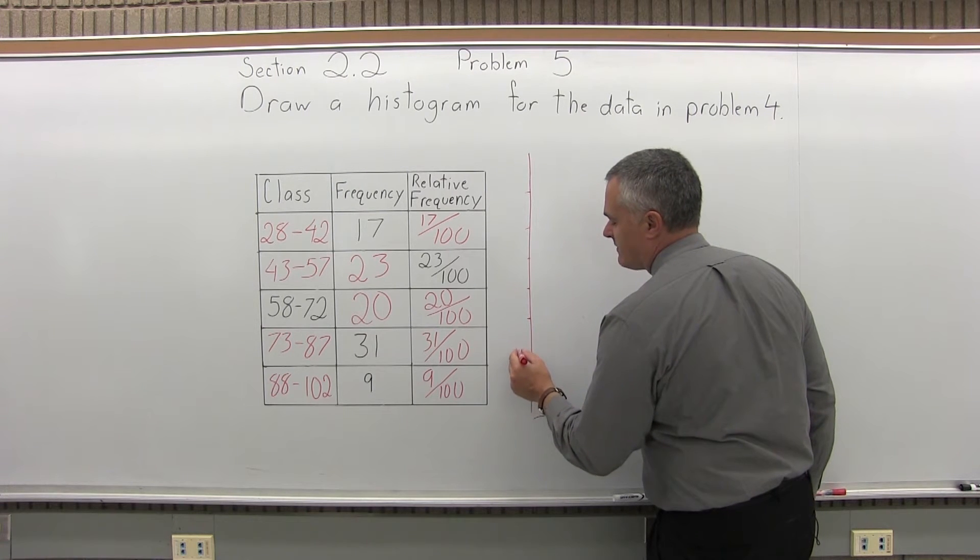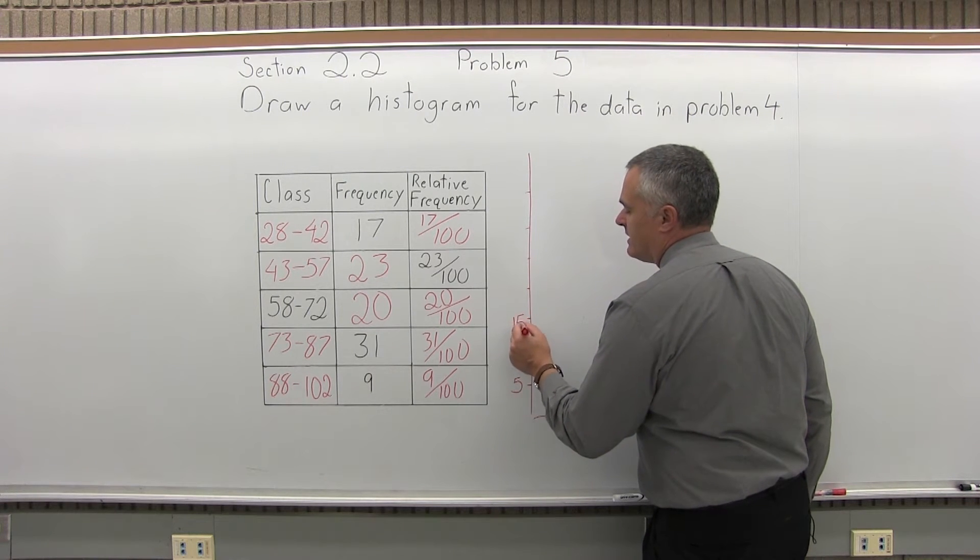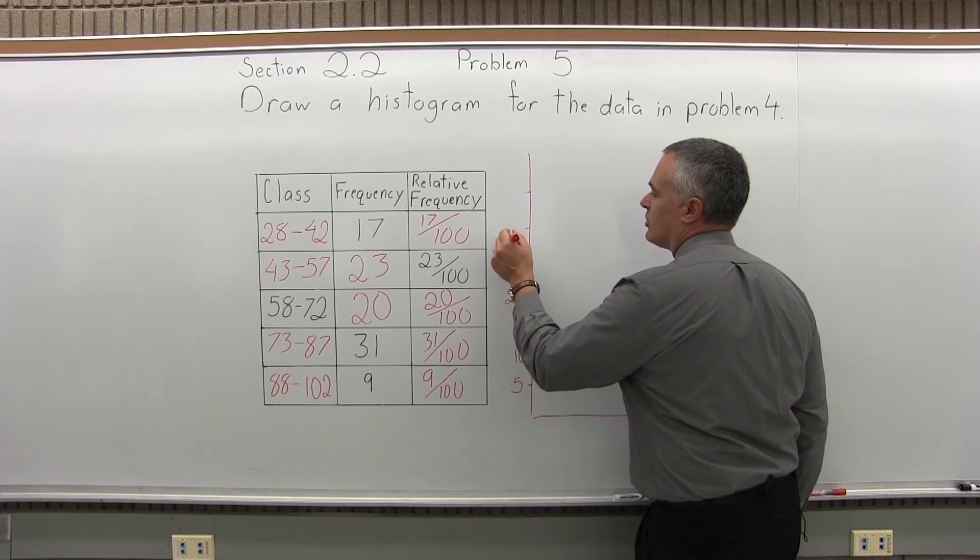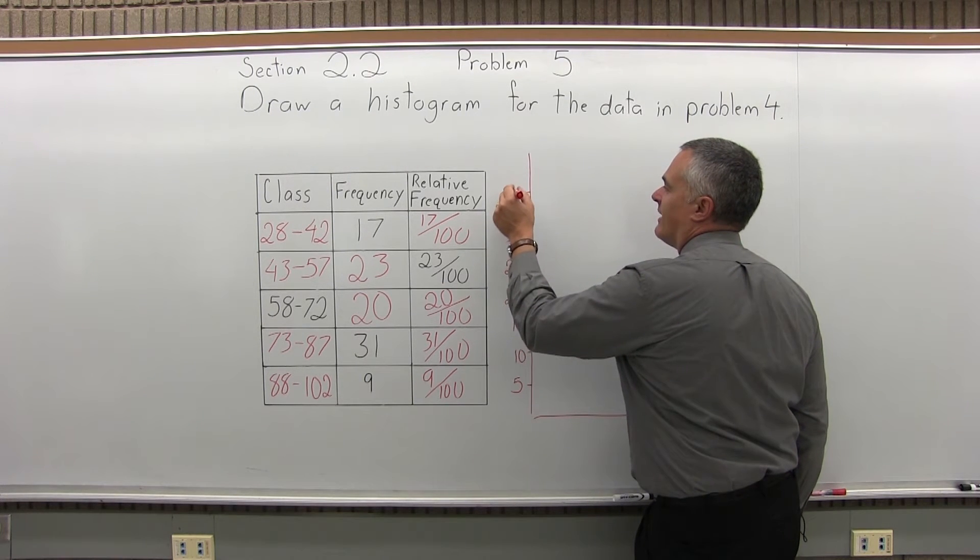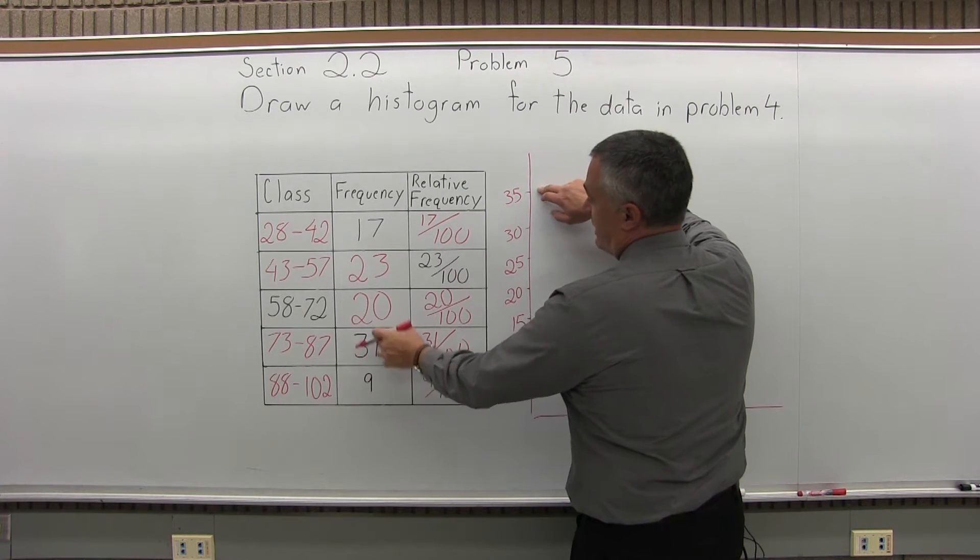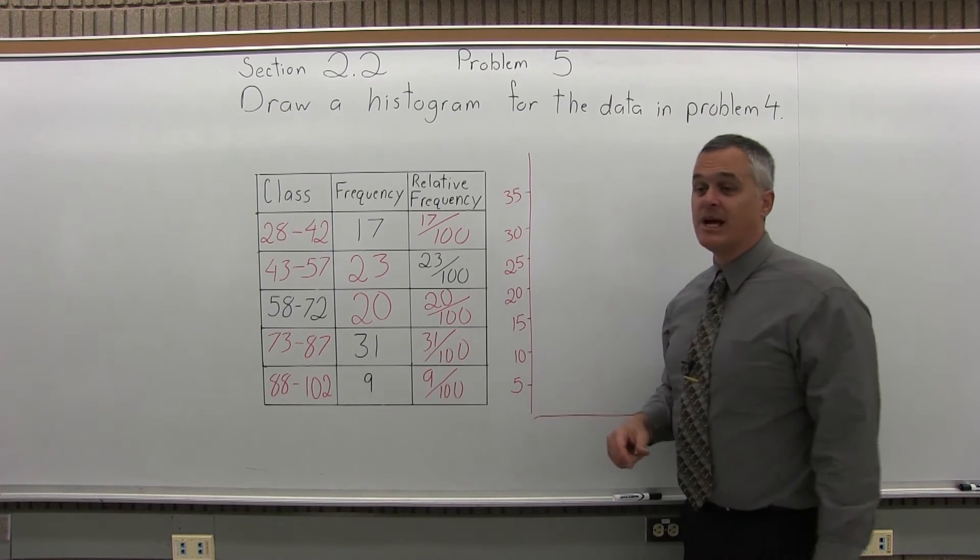So, I'll label them 5, 10, 15, 20, 25, 30, 35. And that number scale that goes up to 35 will accommodate my highest bar of 31. And then everything else is a little bit less.